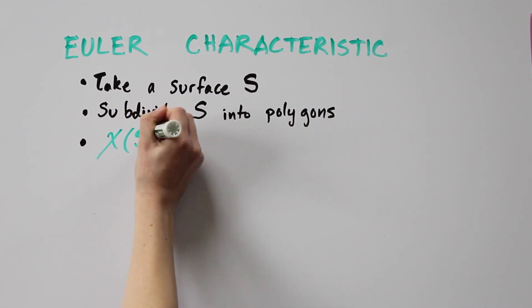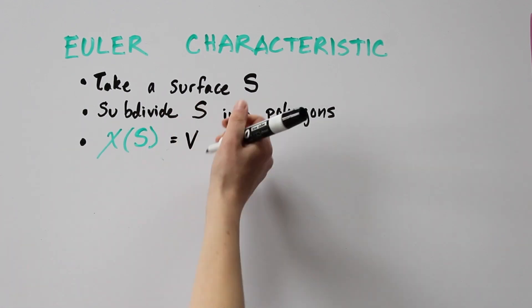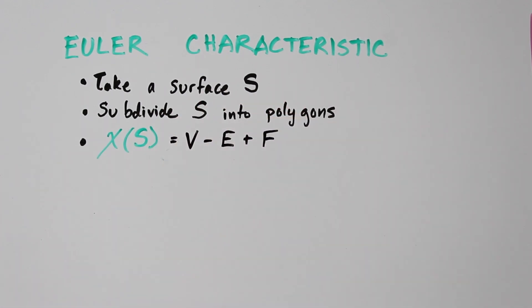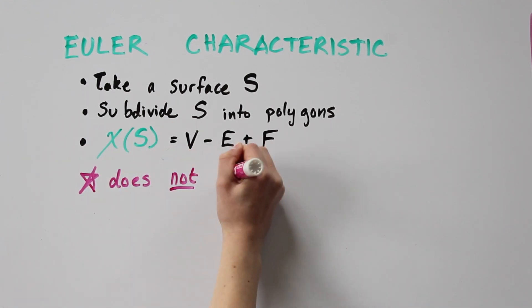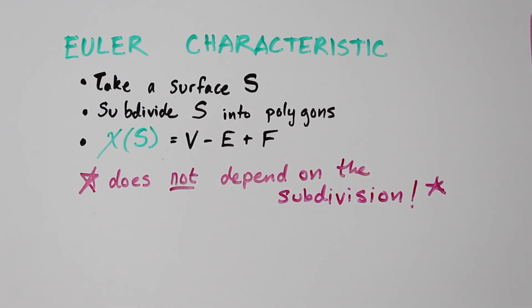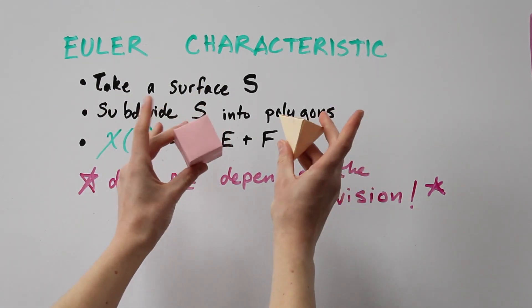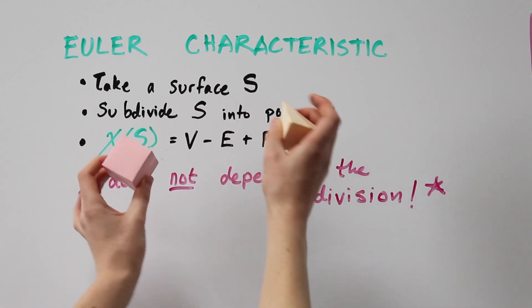Then the Euler characteristic of S is the number of vertices in the subdivision minus the number of edges plus the number of faces. And this value does not depend on the specific way that we subdivide the surface into polygons, just like how the cube and the tetrahedron both gave the same value for V minus E plus F.